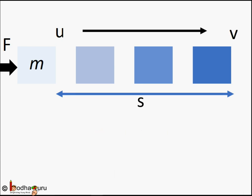Now work done, denoted by W, is the product of force and displacement where F is the force and s is the displacement. Also, F = ma according to Newton's second law of motion.